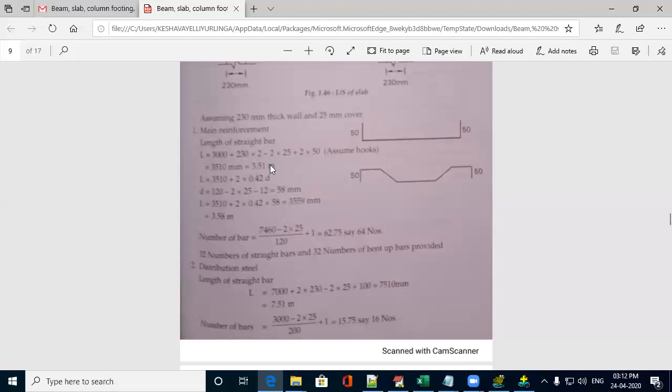This is for straight bar. To get the cranked bar, for this, you have to add 0.42 times the diameter. This is similar to beam calculation. Since it is cranked 2 times at 2 places, so it should be multiplied with the 2.